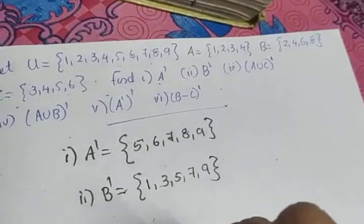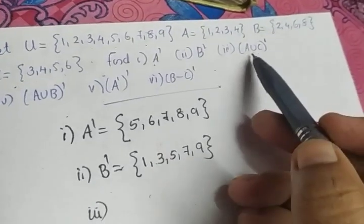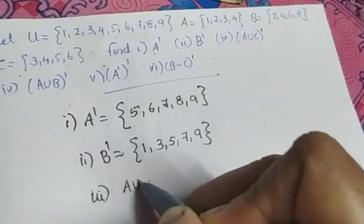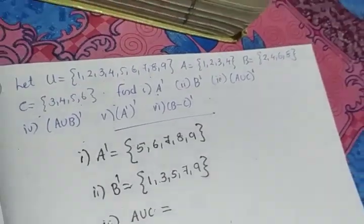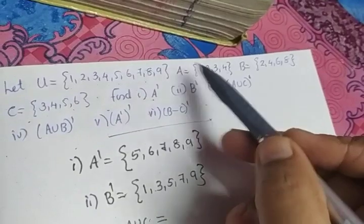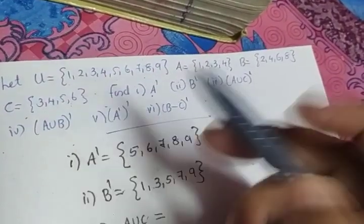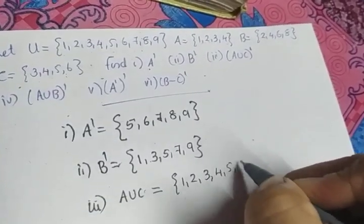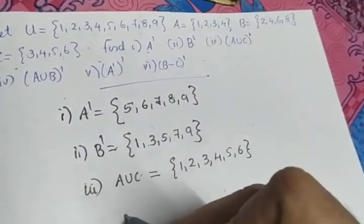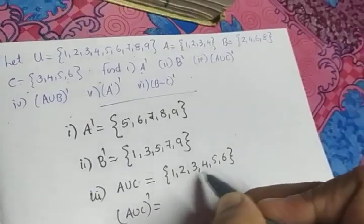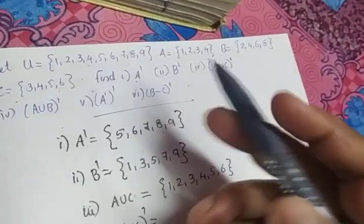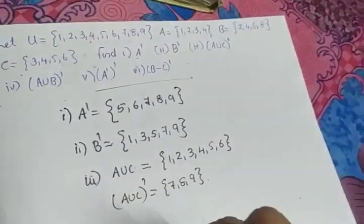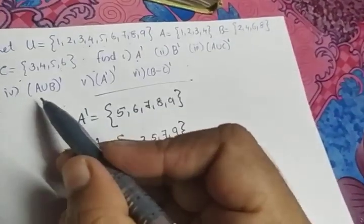The third question is (A union C) dash. Before finding that, first find A union C. A union C means the union of A and C, so the elements are 1, 2, 3, 4, 5, 6 — giving set {1,2,3,4,5,6}. Now to find (A union C) dash, subtract these elements from U, and what we get is {7,8,9}.